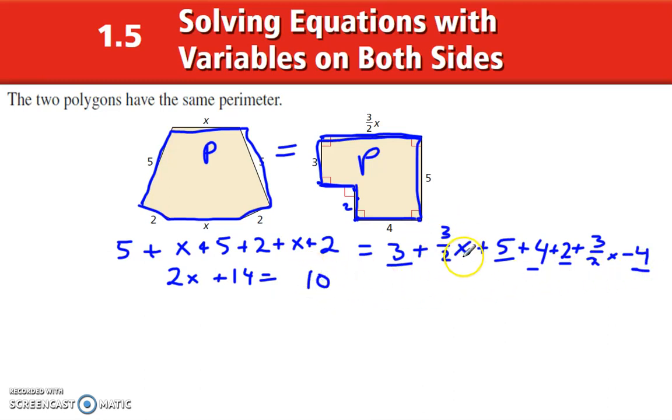3, 5 makes 8, plus 2 is 10, plus 4 is 14, minus 4 is 10. 10, 3 over 2x, plus 3 over 2x, gives us 6 over 2x. Now I can simplify 6 over 2x to give me 3. So I have 2x plus 14 is equal to 10 plus 3x.